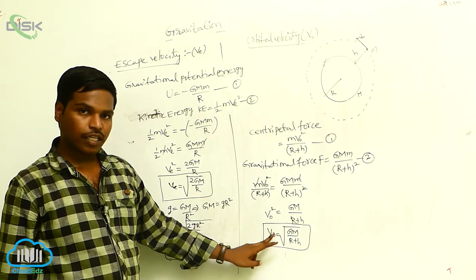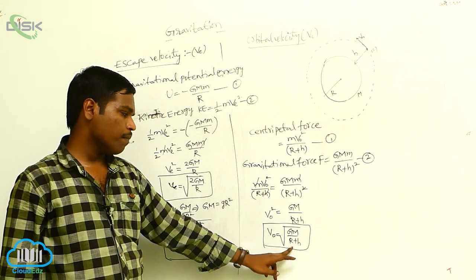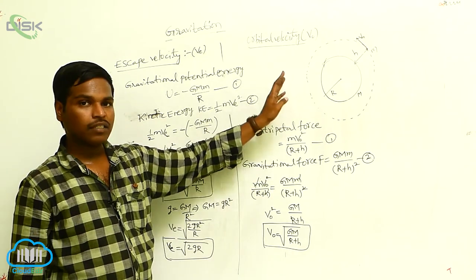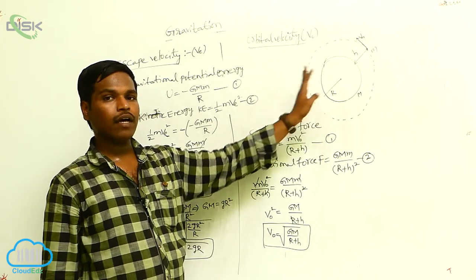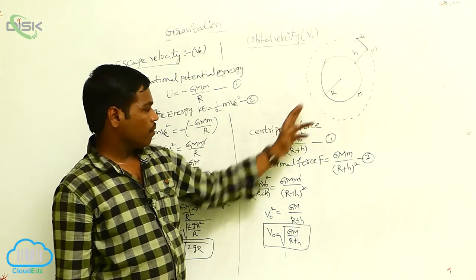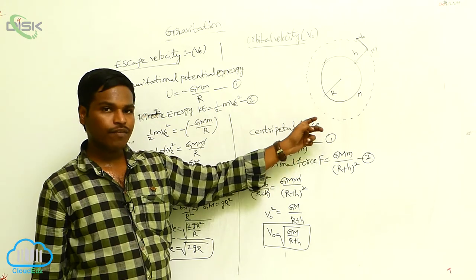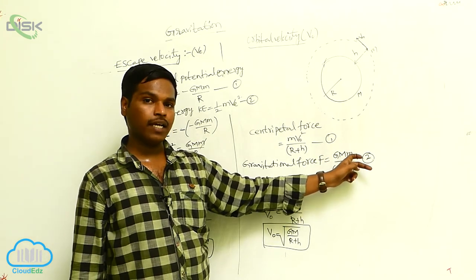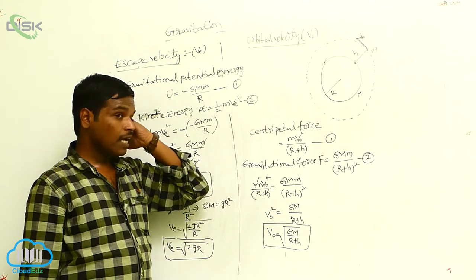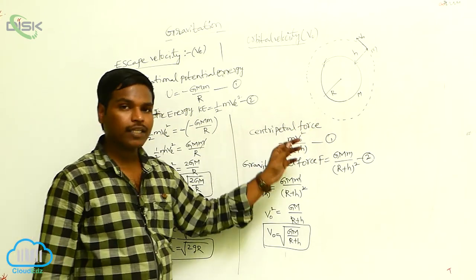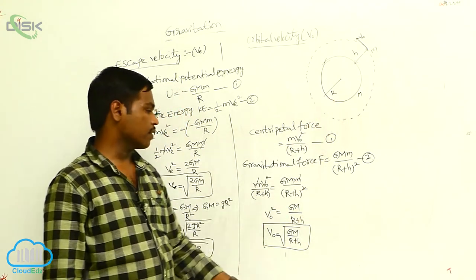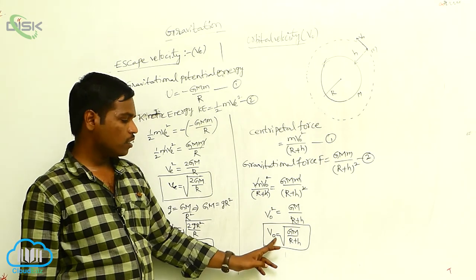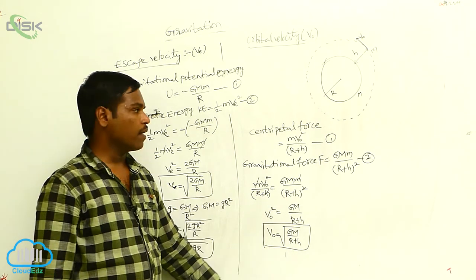The orbital velocity V₀ equals the square root of GM by (R+h). Orbital velocity is the minimum velocity required for an object to revolve around the planet. By equating centripetal force m·V₀² by (R+h) to gravitational force GMm by (R+h)², we get V₀ equals the square root of GM by (R+h).